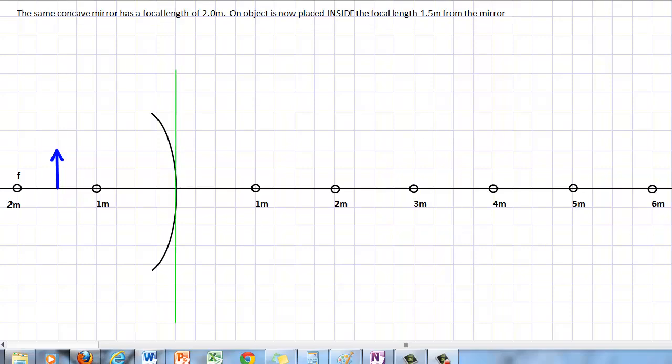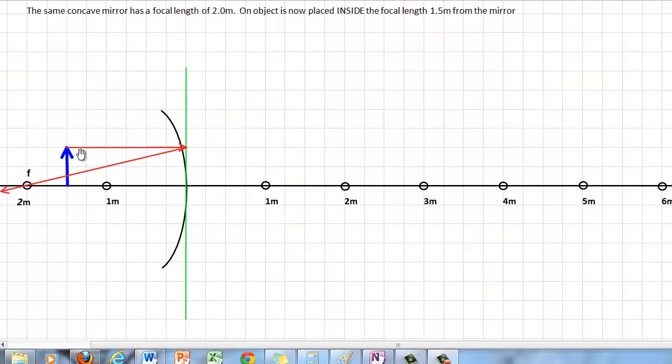Now let's start with our first ray. Our first ray comes off the object and we're going to focus on the tip of our arrow. We're going to try and locate where the tip of the image will be. So we're going to take all our rays from the tip of the arrow. We start with a parallel ray and we know that any ray that's parallel to the mirror will bounce off the mirror and go through the focal point. So let's draw that ray now. So we see our first ray. Parallel bounces through our focal point.